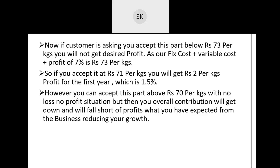If you accept the part at Rs.71 per kg, you will get Rs.2 of profit for the first year, which is around 1.5%. However, you can accept this part above Rs.70 per kg with a no-loss no-profit situation. Because Rs.65 is our variable cost and Rs.5 is our overhead — that comes to Rs.70. So you can accept the part at Rs.70 with no loss no profit, just by covering your overhead cost. You will be able to cover your overhead cost but you will not get any profit.